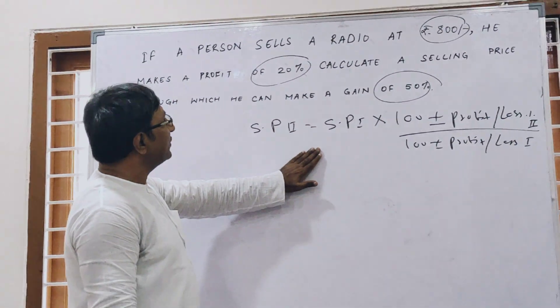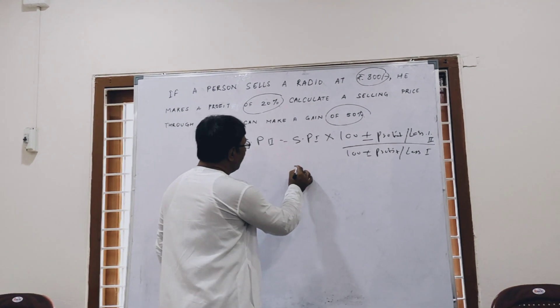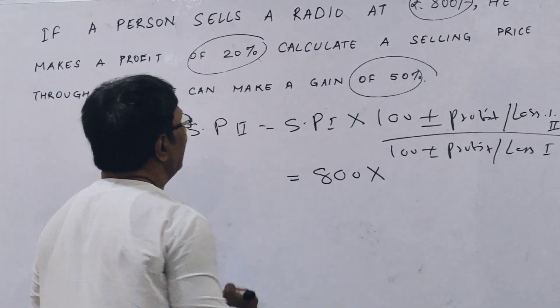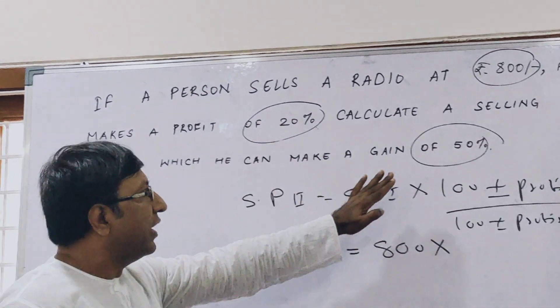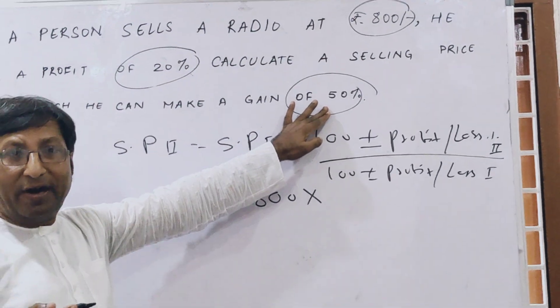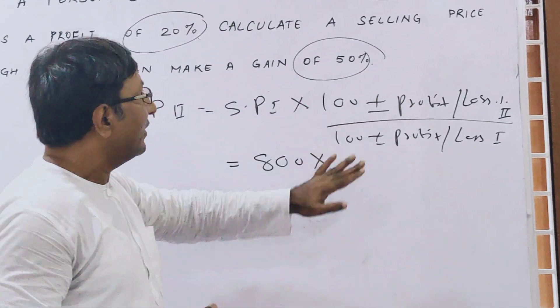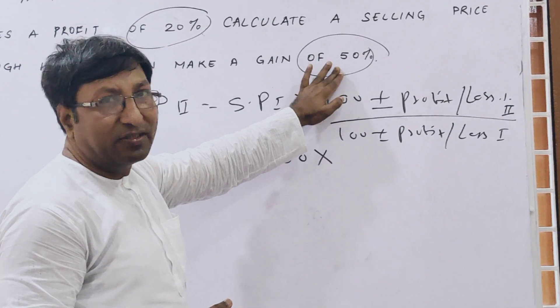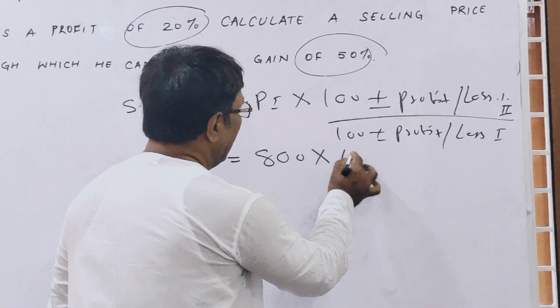In this question you see he is making a profit of 20% and first selling price is 800. First he is making 20% profit and he wants 50%. That means what he wants is the second. So here 100 plus 50 gain, if there is a loss then 100 minus. So here 150.